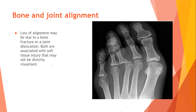Bone and joint alignment. Loss of alignment may be due to a bone fracture or a joint dislocation. Both are associated with soft tissue injury that may not be directly visualized. Here we see loss of alignment of the third metacarpophalangeal joint of the left foot.